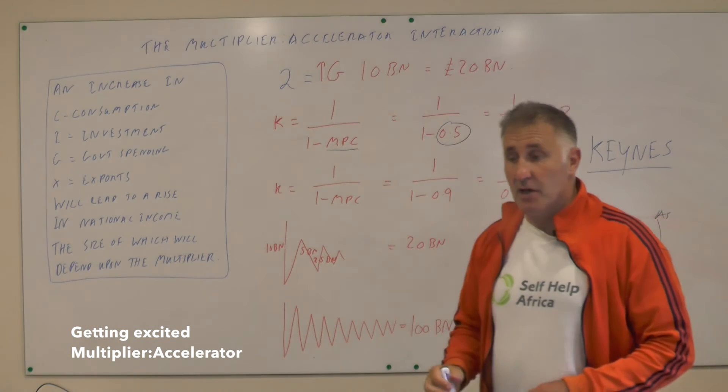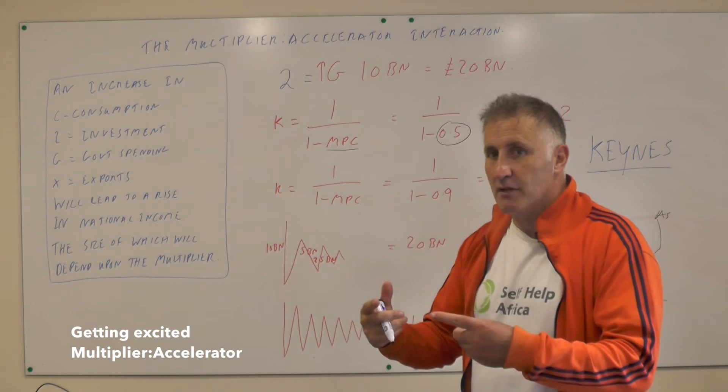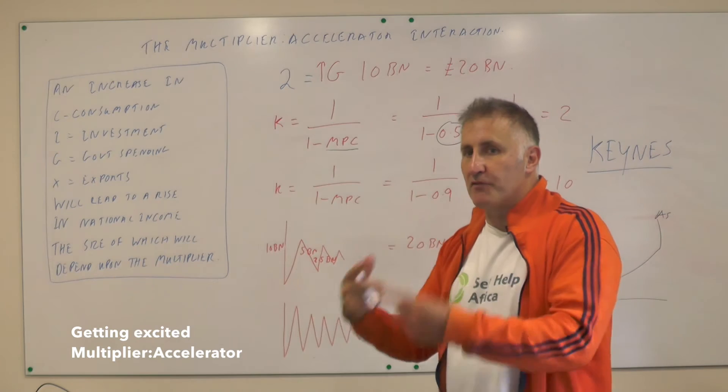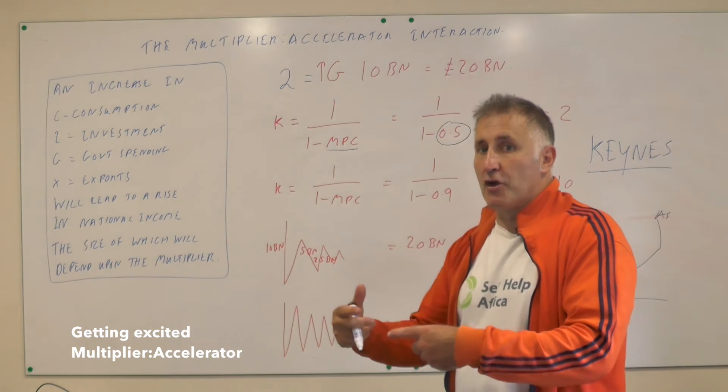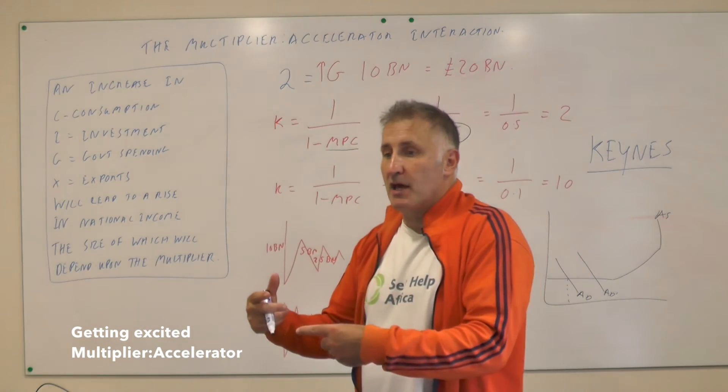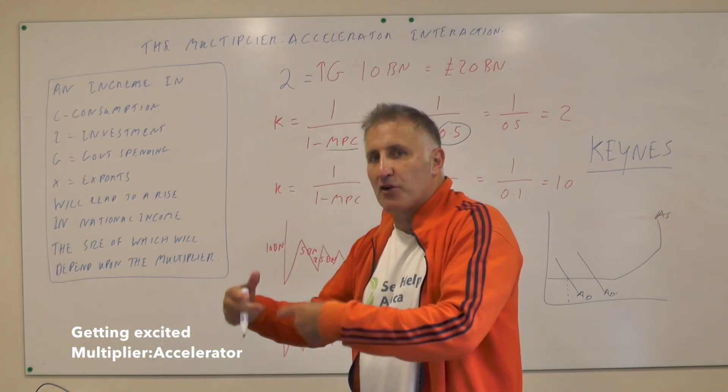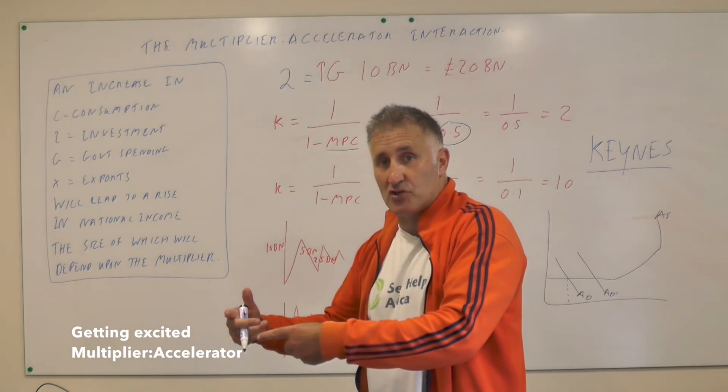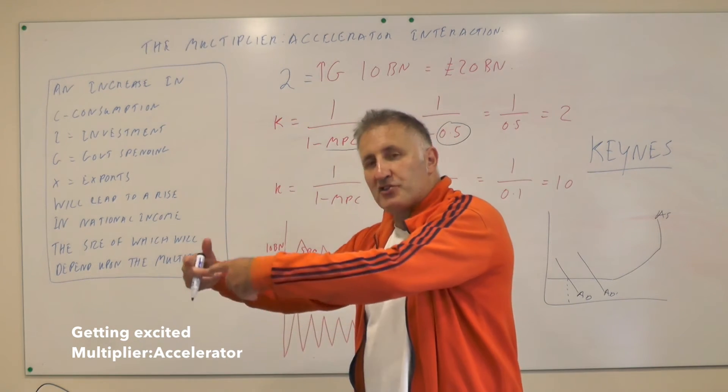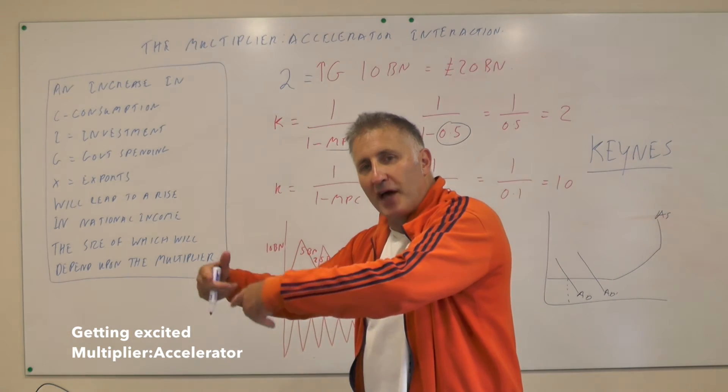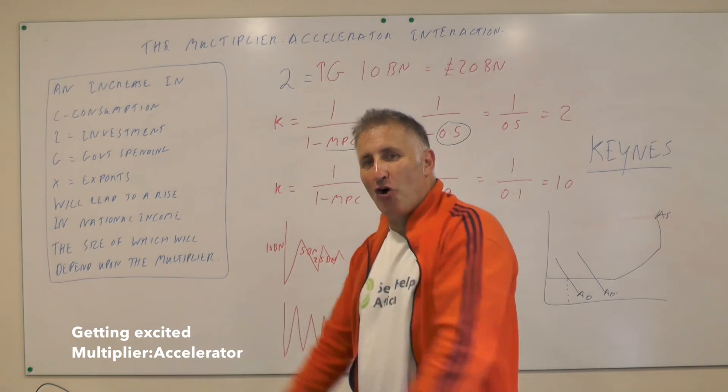Here we assume that the marginal propensity to consume is fifty percent. So if you give someone a hundred quid, they will go and spend fifty quid. Someone else will get that money and they will spend fifty percent of fifty pounds, which will be twenty five pounds. Someone else will get that twelve pounds fifty and they will then spend fifty percent of twelve pounds fifty, which is six pounds twenty five.